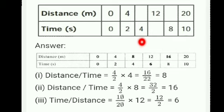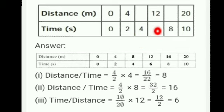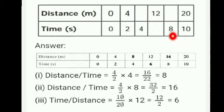Continuing the table calculation: 10 divided by 20 into 12 gives the answer 6. So the missing time value is 6.